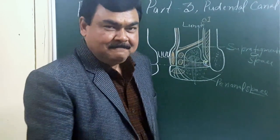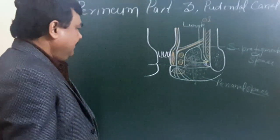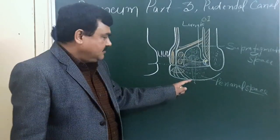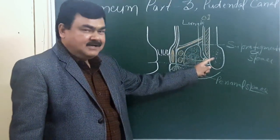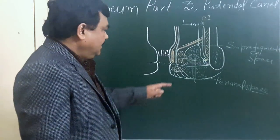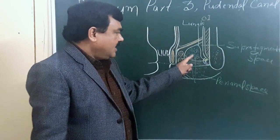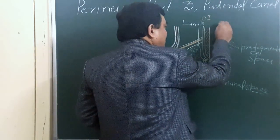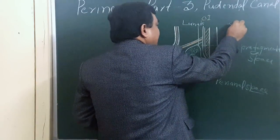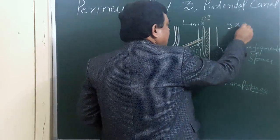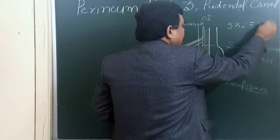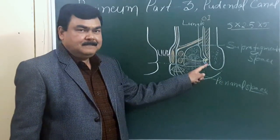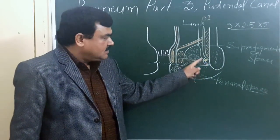Now I will discuss about the perineum part 3. In perineum part 2, you have seen the ischio-rectal fossa — its boundary, base, apex, lateral and medial boundaries. This fossa is divided into 3 spaces: perineum space, ischio-rectal space, and suprategmental space. The dimensions are: anterior-posterior about 5 cm, transverse about 2.5 cm, and vertical about 5 cm. In this diagram you can see the pudendal canal, which we will now discuss.